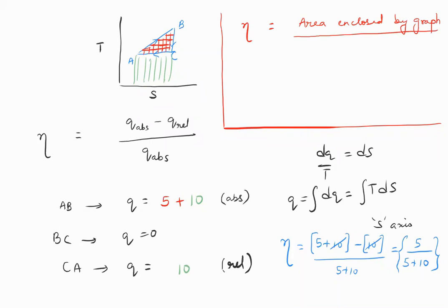Which is entropy increasing, so entropy increasing, which is actually area under the process which is entropy increasing. It becomes difficult to write in words, but finally: it's area enclosed by the graph divided by area under the process where entropy is increasing.